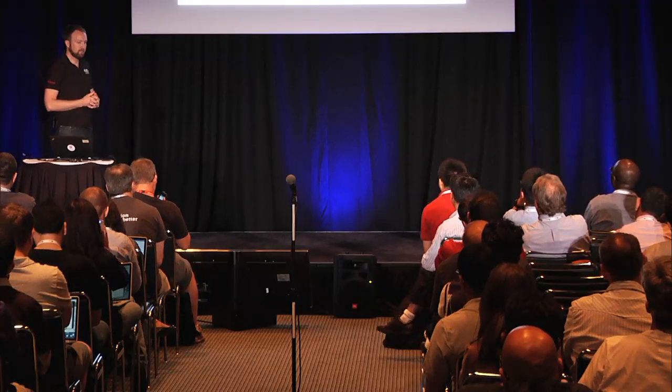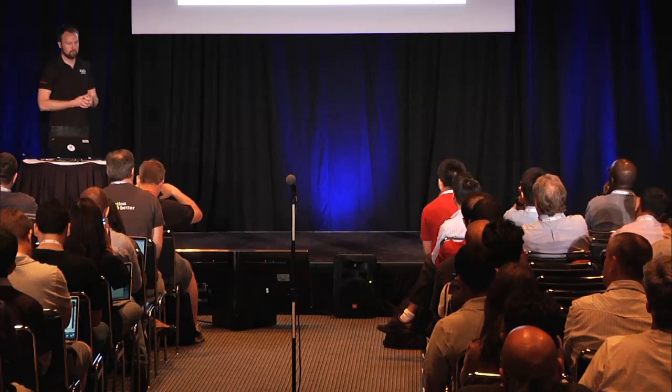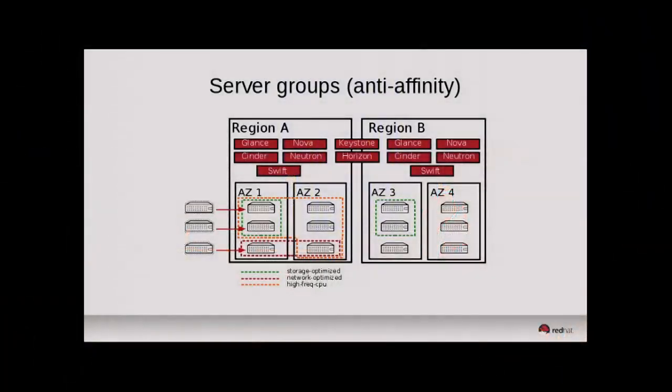If using anti-affinity and specifying the AZ1 availability zone as well, the scheduler will place each instance on a separate host. If you then attempt a fourth instance boot in the same fashion, that would fail. There are proposals in the queue for Juno around soft affinity and soft anti-affinity policies — once you try to place that fourth instance, instead of failing, it would do a best effort to place it on one of the three hosts, allowing for some overlap.